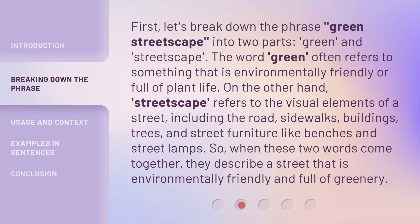First, let's break down the phrase Green Streetscape into two parts: Green and Streetscape. The word Green often refers to something that is environmentally friendly or full of plant life. On the other hand, Streetscape refers to the visual elements of a street, including the road, sidewalks, buildings, trees, and street furniture like benches and street lamps. So, when these two words come together, they describe a street that is environmentally friendly and full of greenery.